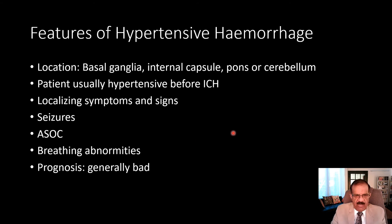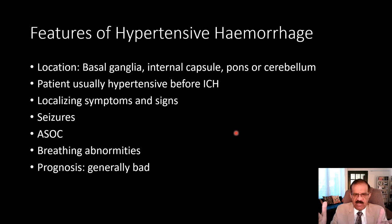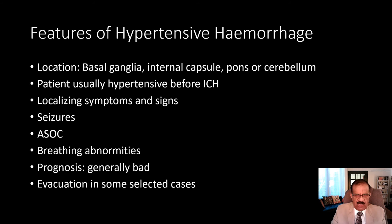Prognosis is generally bad in cases of hemorrhage, but it is not always bad. If a patient has a small hematoma and survives the acute phase, long-term prognosis may actually be better than the same-sized infarction. Once the hematoma is absorbed, the neighboring brain — which was just compressed — takes its position again and neurological function is restored. But big hematomas have very high mortality, and evacuation in some selected cases is also recommended.